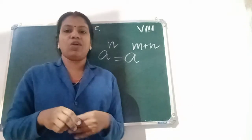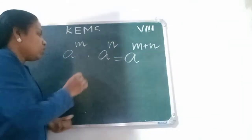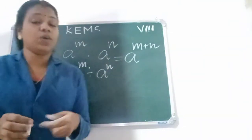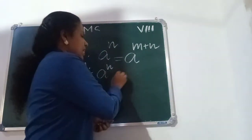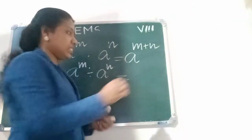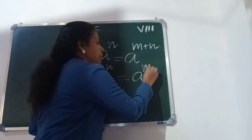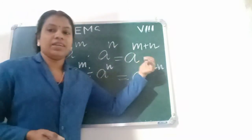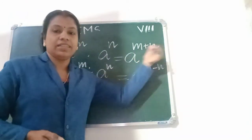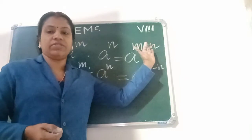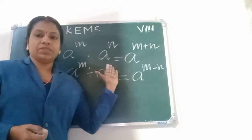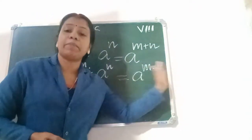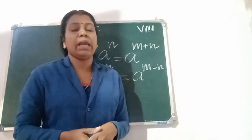Second law is the division law: A raised to M divided by A raised to N equals A raised to M minus N. For division, we subtract the powers. That is A power M minus N.